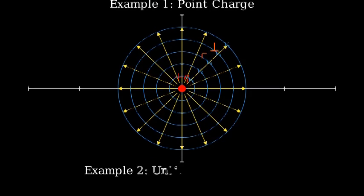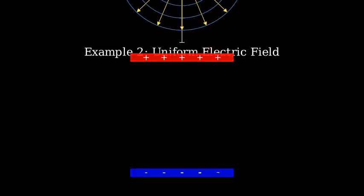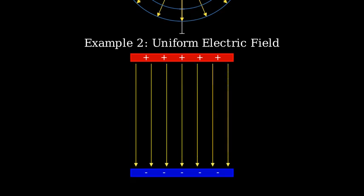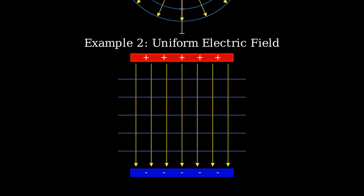Next, let's look at a uniform electric field, such as the field between two parallel charged plates. In a uniform field, the electric field lines are parallel and equally spaced. Here, the equipotential surfaces are parallel planes that are perpendicular to the field lines. Every point on each of these planes has the same electric potential. Again, notice the perpendicular relationship between the field lines and the equipotential surfaces.